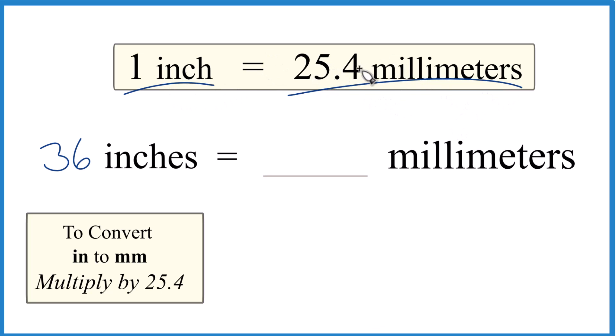So if one inch is 25.4 millimeters, 36 would just be 36 times 25.4. We take 36 inches and multiply that times 25.4 millimeters.